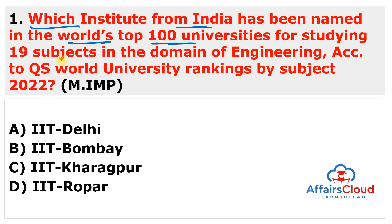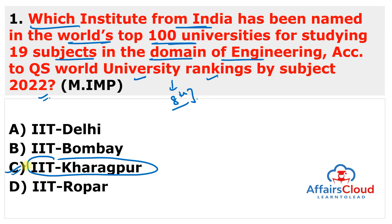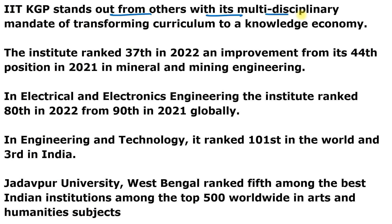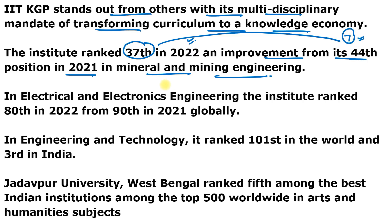Which institute from India has been named in the world's top 100 universities for studying 19 subjects in the domain of engineering, according to the QS World University Ranking by Subject 2022? The answer is IIT Kharagpur. According to the 12th edition of the QS World University Ranking by Subject 2022, IIT Kharagpur has been named among the world's top 100 universities for studying 19 subjects in engineering. IIT Kharagpur ranked 37th in 2022, an improvement from its 44th position in 2021, in Mineral and Mining Engineering — a seven-rank improvement.